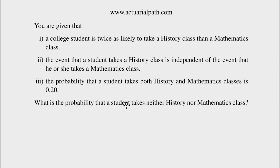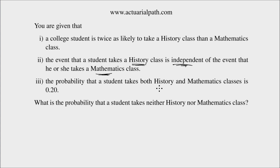Hi guys. This is an example on independent events. You are given that a college student is twice as likely to take a history class than a mathematics class. You also know that the event that a student takes history class is independent of the event that he or she takes a math class. And finally, the probability that a student takes history and mathematics classes is 0.20. The question is to find the probability that a student takes neither history nor mathematics classes.